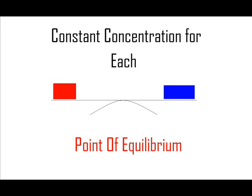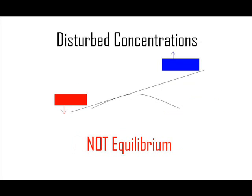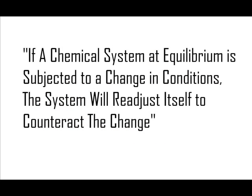When a system is in equilibrium, the reactants and products will have constant concentrations. And if these conditions change, the system will no longer be in equilibrium. And so, Le Chatelier's principle states that if a chemical system at equilibrium is subjected to a change in conditions, the system will readjust itself to counteract that change.